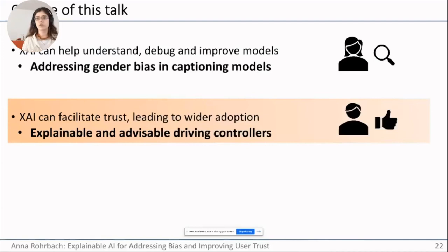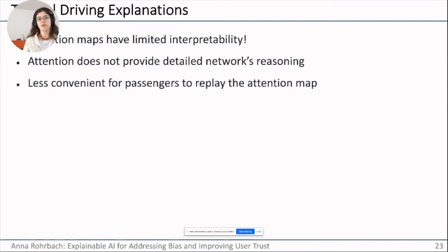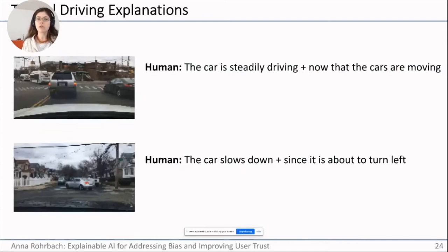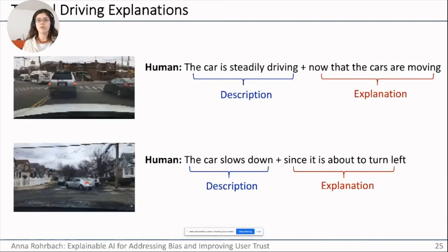Now I'd like to move to the second part: how can XAI facilitate trust and improve user experience in the scenario of driving controllers? Attention maps or saliency maps — as seen in the previous section — are limited in what they can convey to end users. While useful to developers, they are not detailed or easy to communicate to general users. We argue that textual explanations are a much more natural way to communicate what is happening and why in a driving scenario.